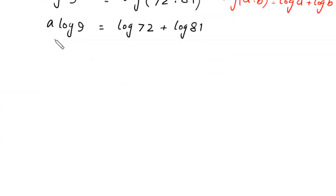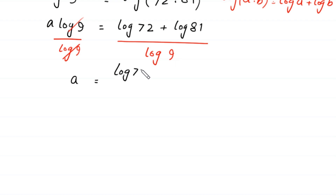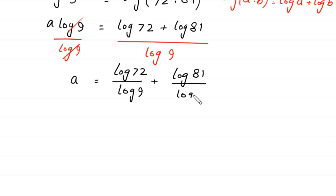Now, from here we divide both sides of this equation by log of 9. At the right side we divide by log of 9, so this log of 9 will be cancelled out with this log of 9, and at the left side we are left with a is equal to log of 72 plus log of 81 over log of 9, which can be written as log of 72 divided by log of 9 plus log of 81 divided by log of 9.